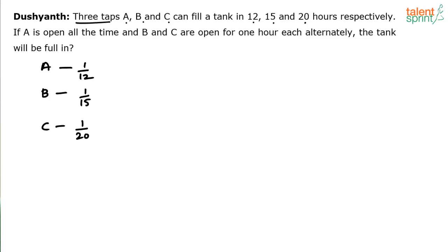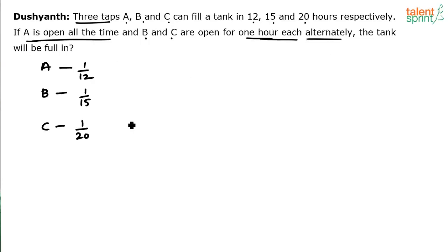Now read the next part of the question: A is open all the time — A works throughout — but B and C are open for one hour each alternately. So A is always working, but B and C come in alternately for one hour each.